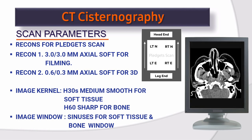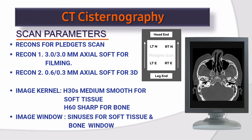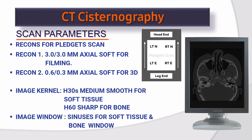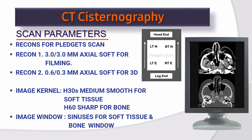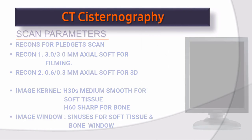Image kernel: H30 medium smooth for soft tissue; H60 sharp for bone. Image window: sinuses window for both soft tissue and bone window.